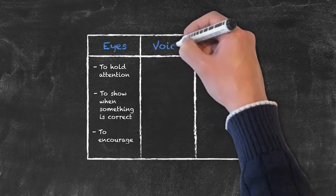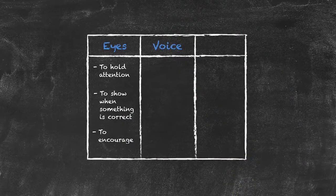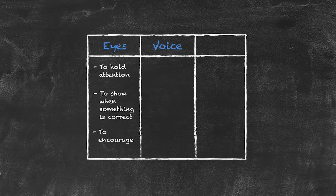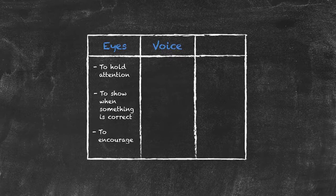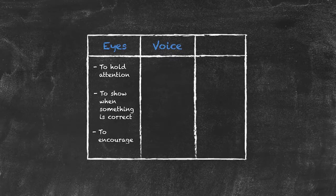Moving on to the voice. The voice itself will change naturally depending upon what you're doing in the classroom. And we should be careful that when using our voice, we enunciate every single word very clearly. In the same way that we write on the board in the form of print, we should try to speak very slowly and very clearly, making each sound as we pronounce those words.